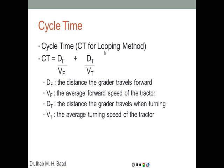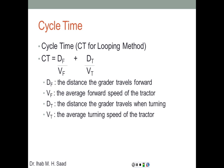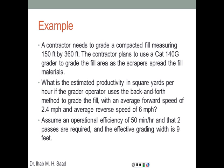For the looping method, cycle time equals df over vf plus dt over vt — where dt is the distance the grader travels when turning and vt is the average turning speed — since the grader is always traveling forward. So we have three different methods to calculate productivity depending on the mode of operation: linear, back-and-forth, or looping.